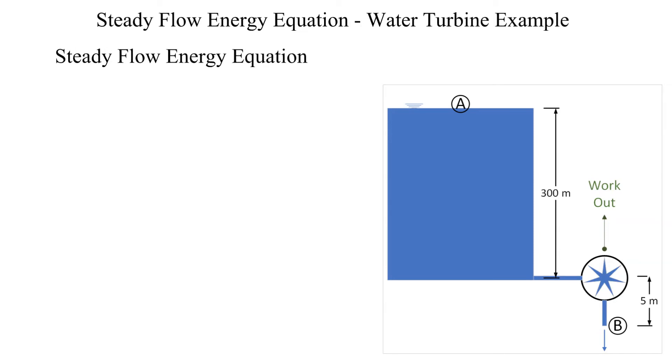Let's apply the steady flow energy equation from point alpha to bravo. As written, it is in dimensions of energy per mass. We are looking for power so we'll still have some work to do after we solve for the specific work out.